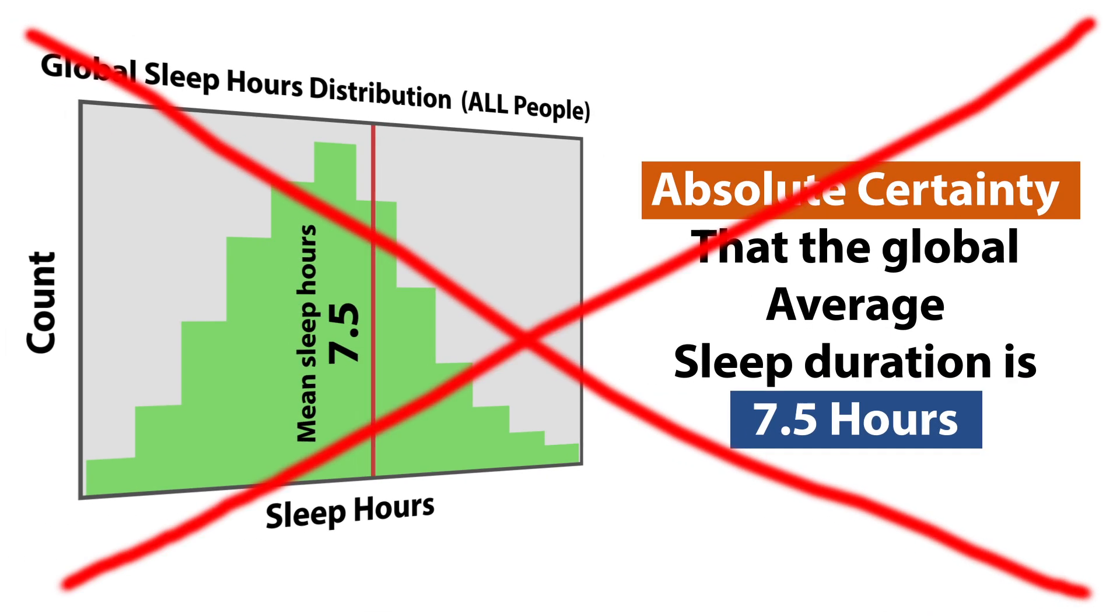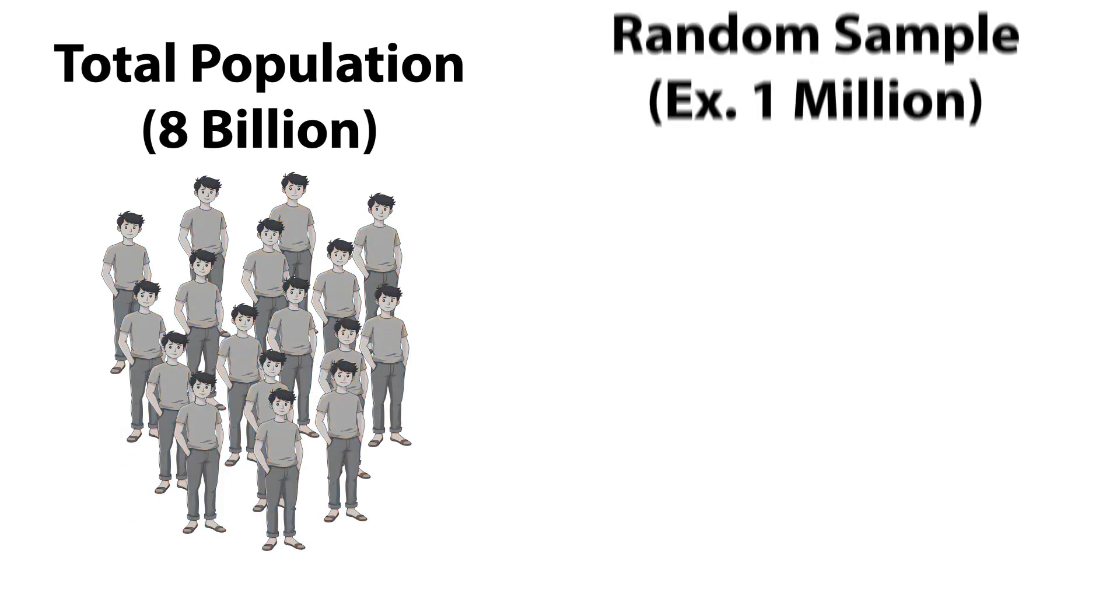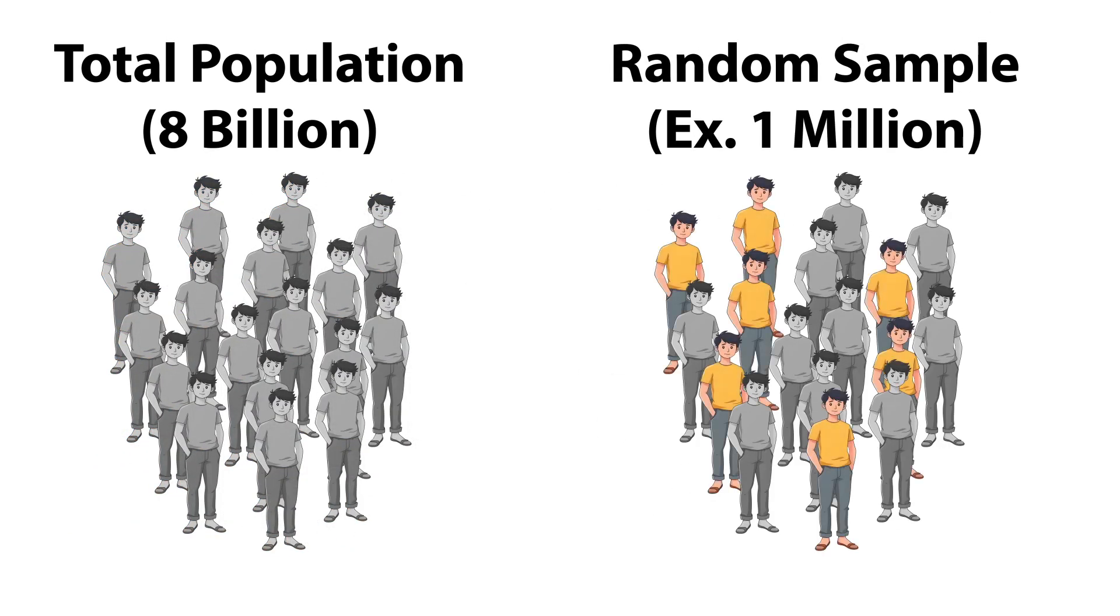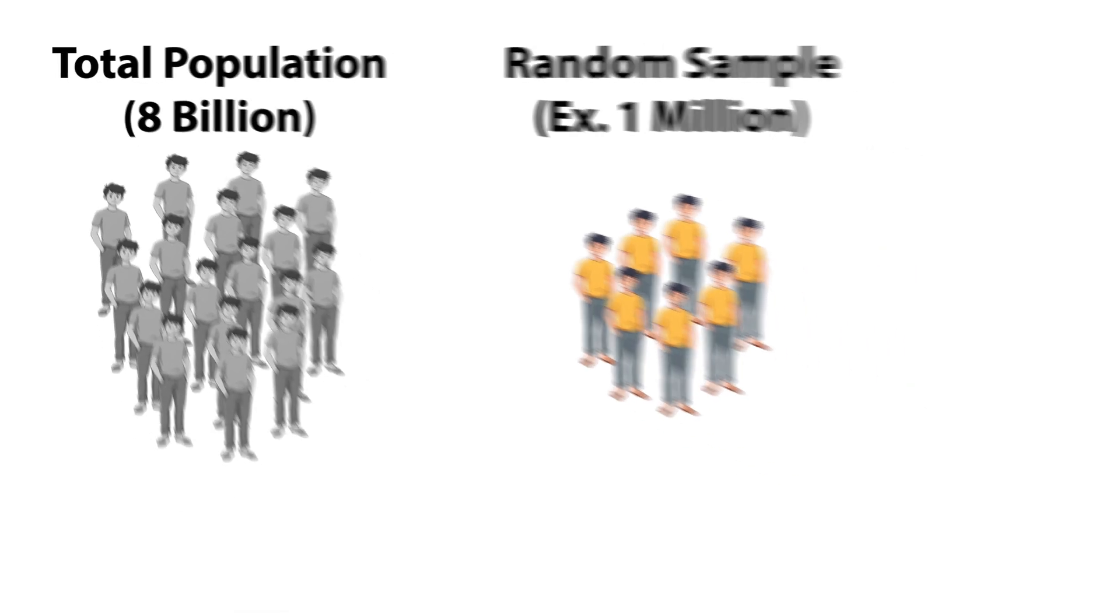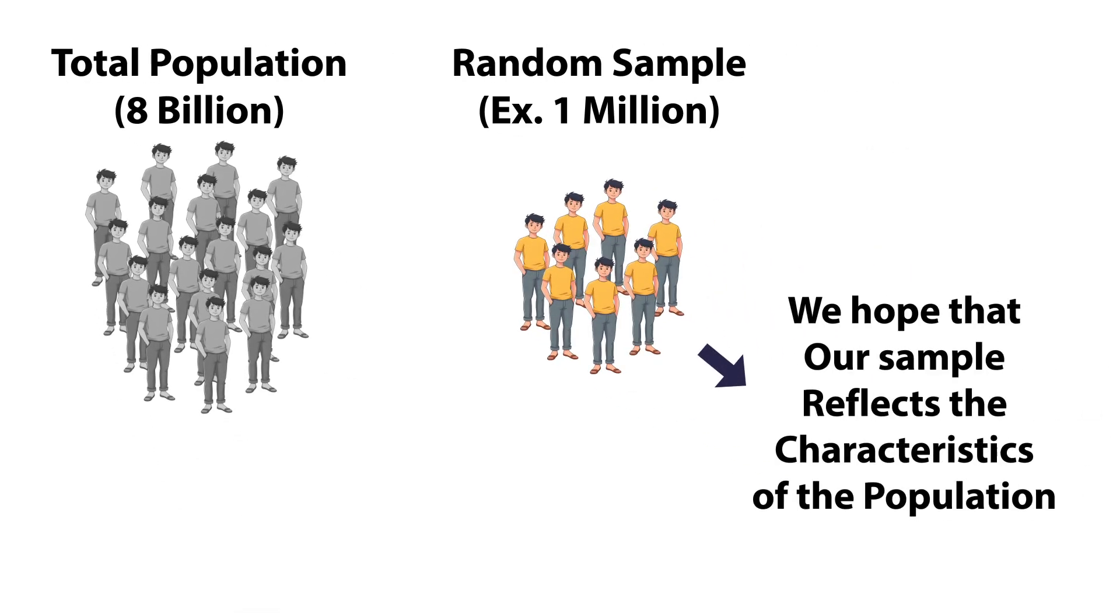But in reality, things are a bit complicated. We can't just survey everyone. Instead, we take a sample, a smaller group selected randomly from the population, and hope that it is a good representative of the unobserved data.